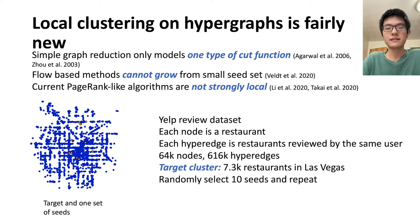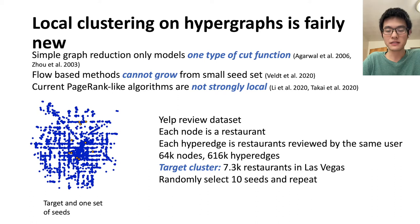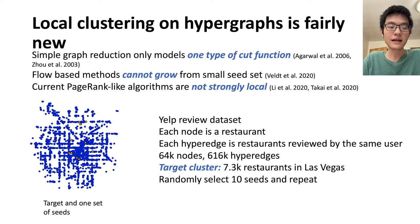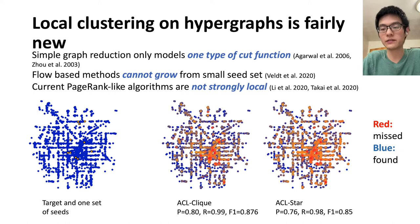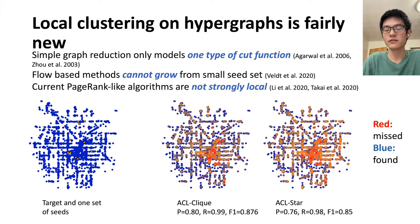Local clustering on hypergraphs is a fairly new topic, and most existing methods have their own drawbacks. To illustrate this, let's look at a hypergraph constructed from the Yelp review dataset. Each node is a restaurant, and each hyperedge is the restaurants reviewed by the same user. This graph has around 60k nodes and 600k hyperedges. Our target cluster is all the restaurants in the city of Las Vegas. For each experiment, we randomly select 10 nodes as the seed nodes and want to find all the other restaurants in Las Vegas. In the results, red nodes are missed by the algorithm, blue nodes have been found, and the color gradient from red to blue indicates increasing probability of being found.